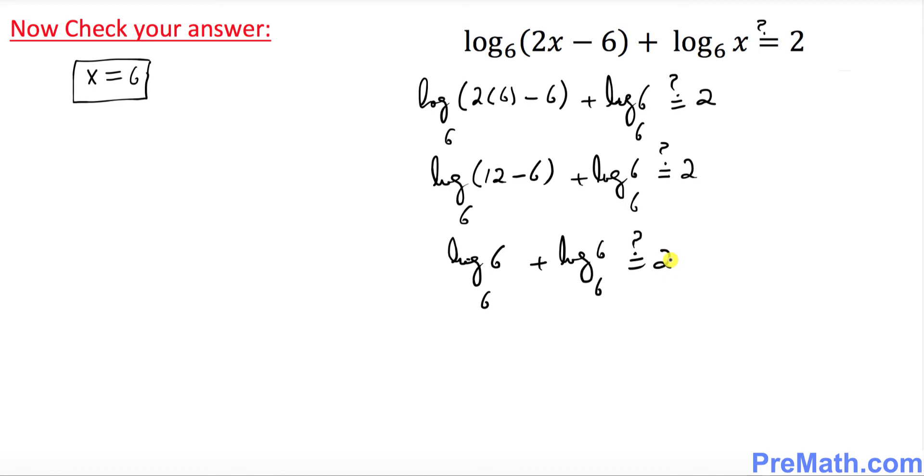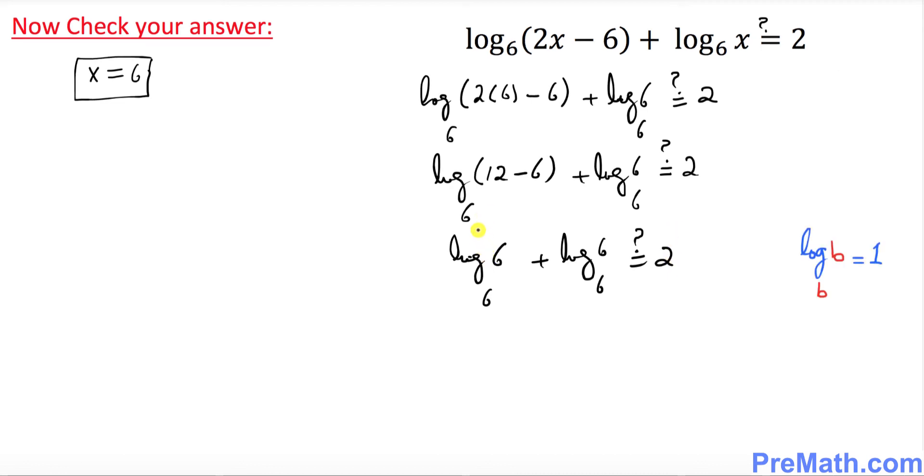And now look at this one. When these two numbers, the argument and the base, are the same, by this fact they are equal to 1. So this is 1 plus 1. Is it equal to 2? So 2 equals to 2. Yes, this statement is true.